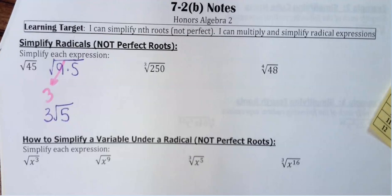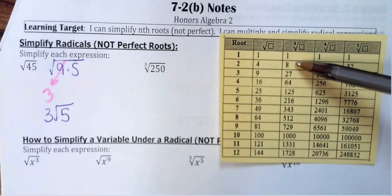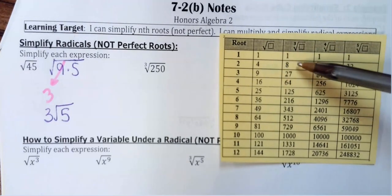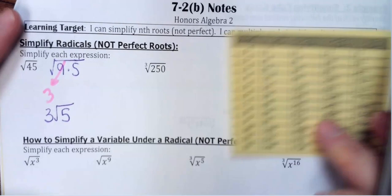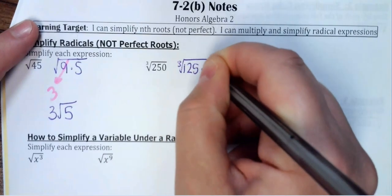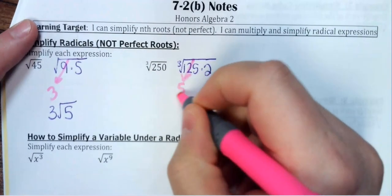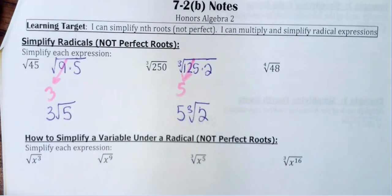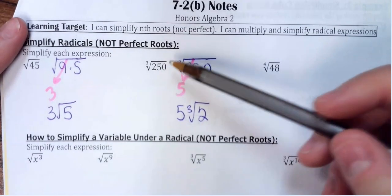250 is under a cube root, so you're looking at those numbers. You can test 250 by dividing it by the numbers on the list — don't use 1, start with the second number down. 125 goes into 250, so I rewrite this: 250 is the same thing as 125 times 2. Take the cube root of 125, that comes out as 5, and left under the cube root I have a 2. With a factor tree under a cube root, you pull out groups of three versus groups of two for a square root.